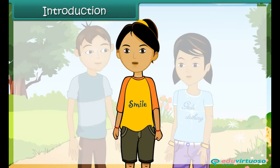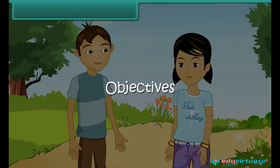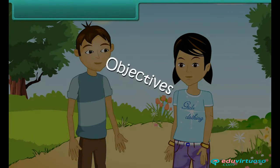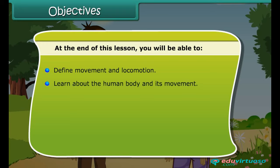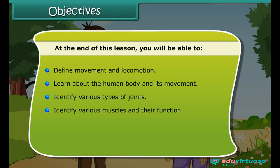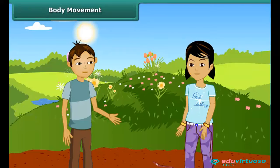Children, in this lesson we will learn about body movement and the difference between movement and locomotion. At the end of this lesson, you will be able to define movement and locomotion, learn about the human body and its movement, identify various types of joints, identify various muscles and their functions, identify movements in various animals, and identify the streamlined body.